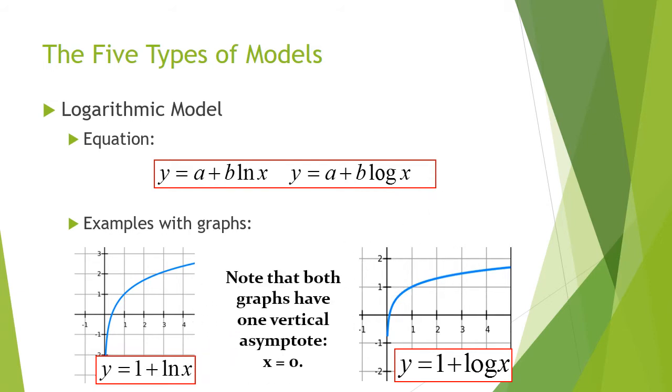Note that both graphs have a vertical asymptote, and that is going to be at x equals 0. So this is the only one we've had where we have a vertical instead of a horizontal asymptote.